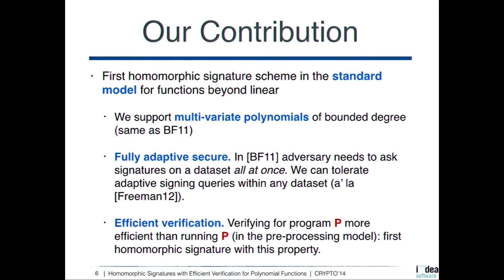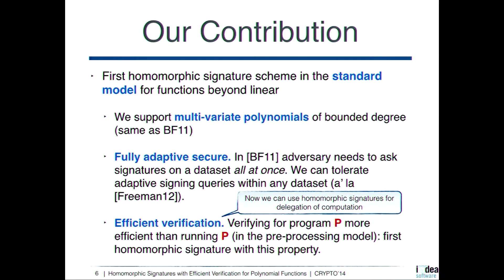In particular, we support multivariate polynomials of bounded degree. Our scheme is proven fully adaptive secure — in contrast to Boneh-Freeman, where the adversary had to query all messages in a dataset at once. We can tolerate fully adaptive queries. Finally, we introduce and realize a notion of efficient verification for homomorphic signatures: if you want to verify with respect to a program P, you can do it more efficiently than running P, working in the preprocessing model. This opens the way to using homomorphic signatures for verifiable delegation of computation.